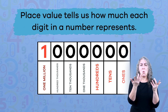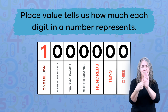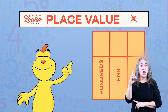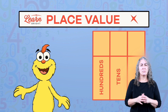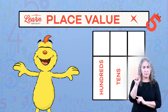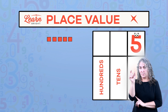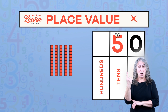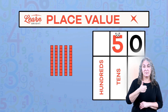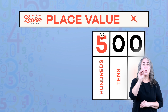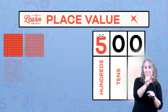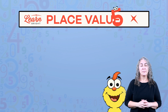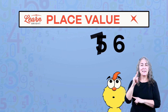Place value tells us how much each digit in a number represents. This chart represents the values: ones, tens, and hundreds. It's important to learn the value of each digit in a number. For example, the number five in the ones place has a value of five. But if we move the five to the tens place, we now have five tens, or the number 50. And if we move that five to the hundreds place, we now have five hundreds, or five hundred.